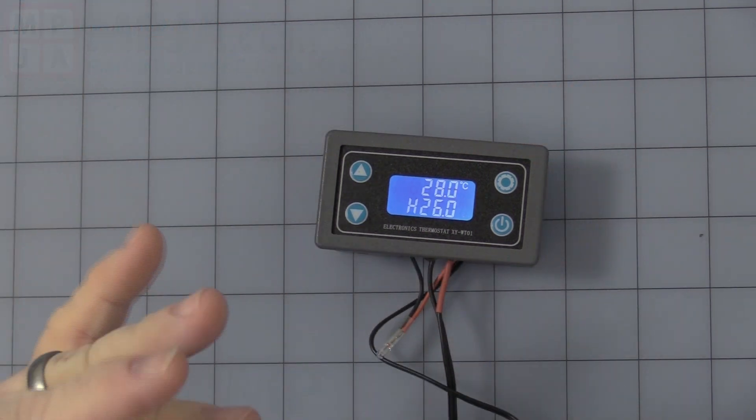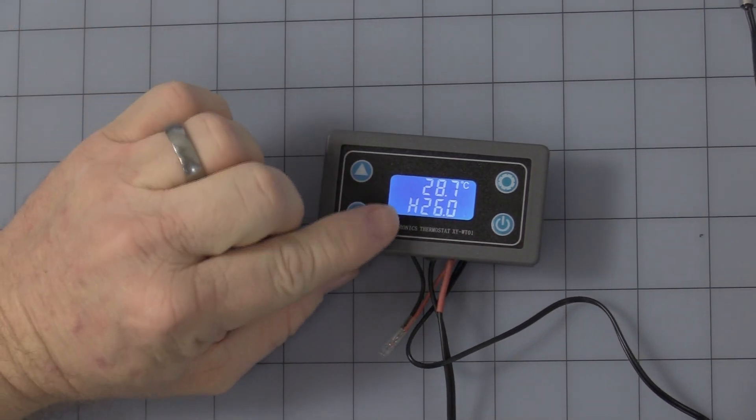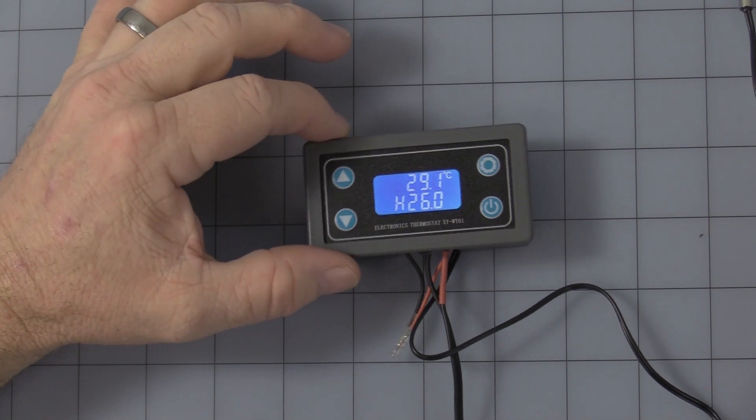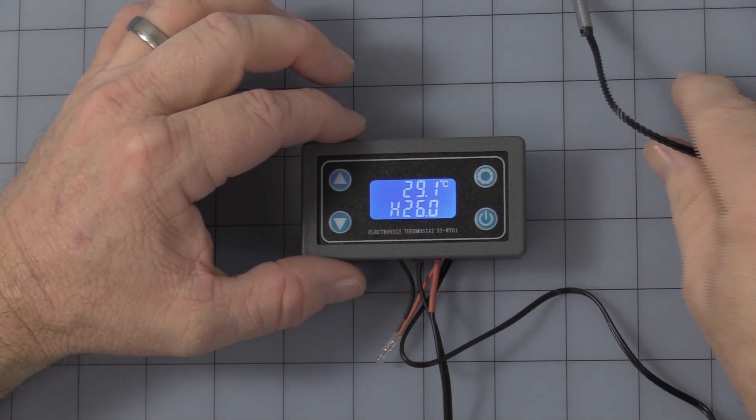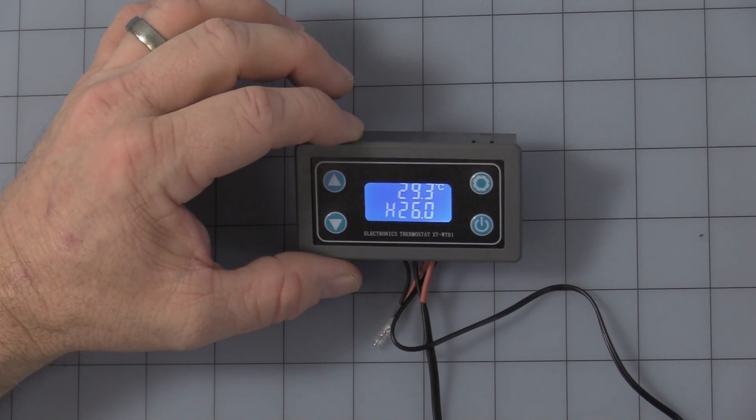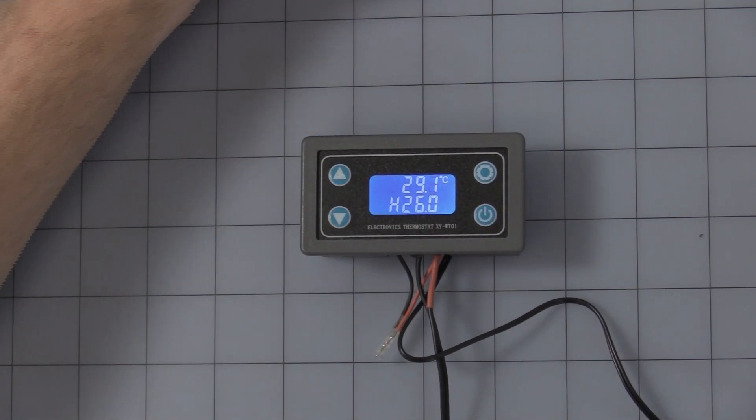The second line down, H means for heating. This is in heating mode and it's set at 26 degrees Celsius. This display is Celsius only, so we have to let it get the temperature down below 26 degrees to have it turn on.